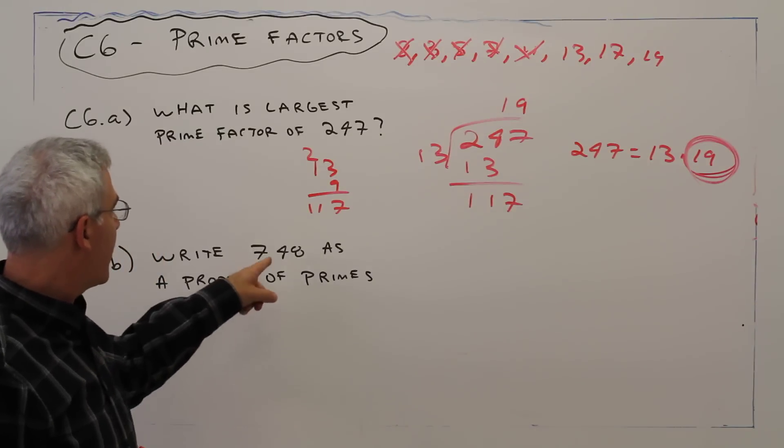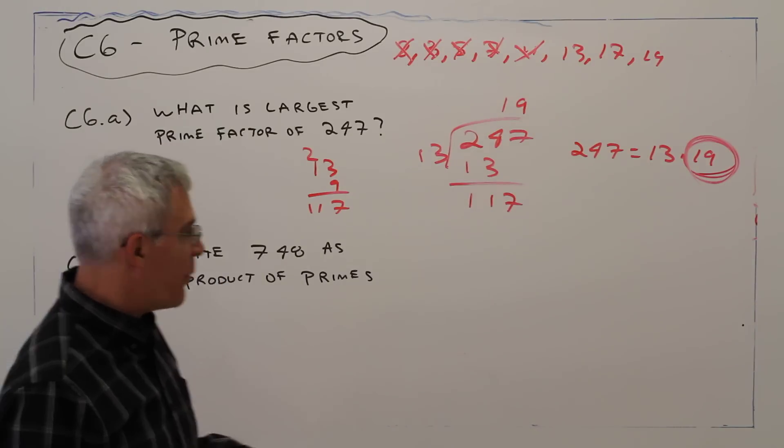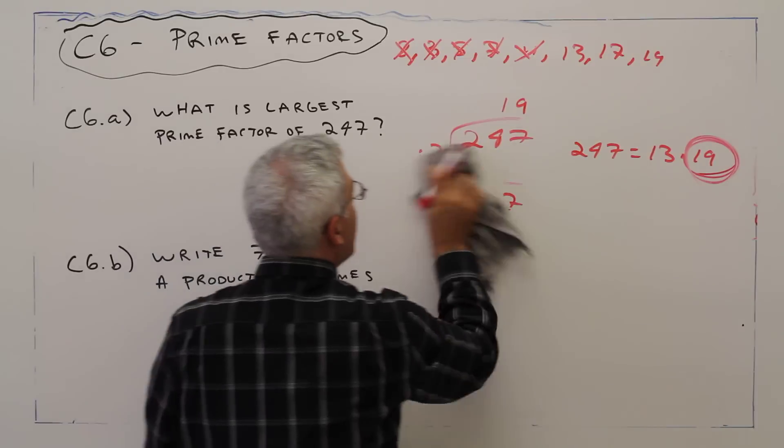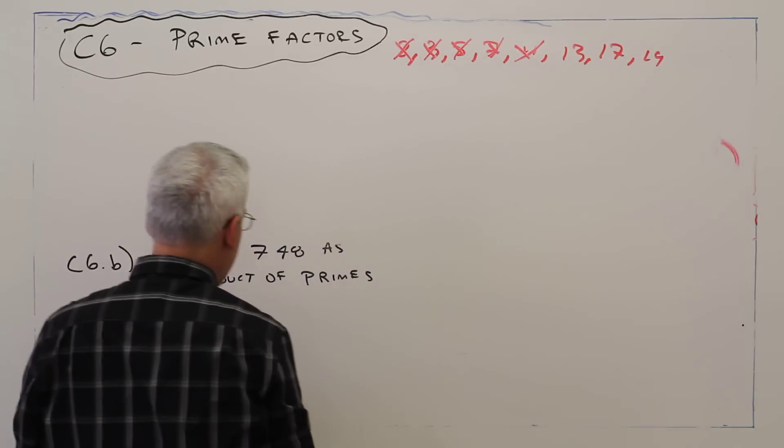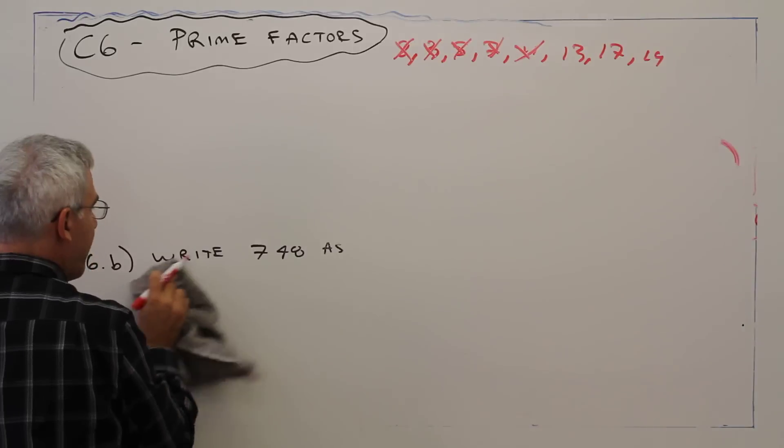Okay, next one. Write 748 as a product of primes. Okay, so we'll do the same basic process. Let's just do a factor tree.